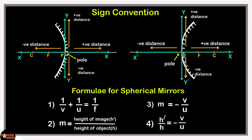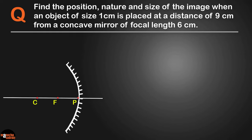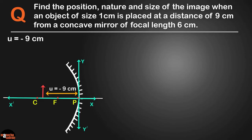Let's place the 4 formulae for spherical mirrors on our concept board. Now let's look at some examples of how to apply the sign convention and formulae for mirrors. First example: find the position, nature and size of the image when an object of size 1 centimeter is placed at a distance of 9 centimeters from a concave mirror of focal length 6 centimeters. First, draw a rough diagram of a concave mirror and an object placed in front of the mirror. Next, draw the X and Y axis for the sign convention. What should we write for the focal length F of the concave mirror — plus 6 centimeters or minus 6 centimeters?